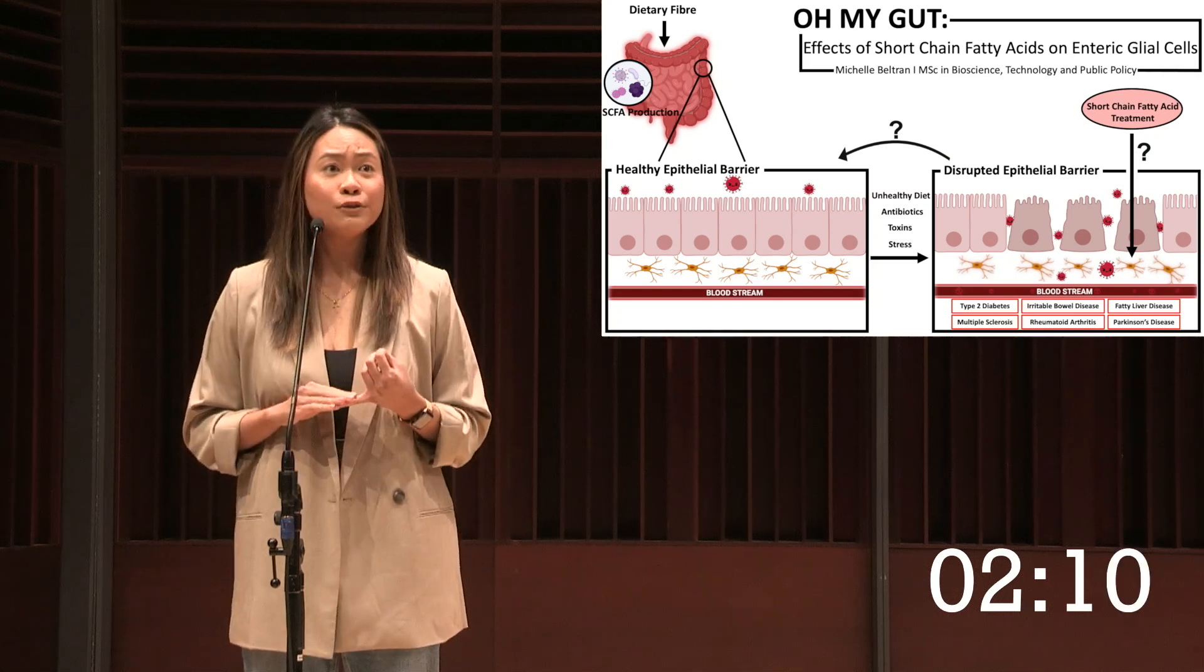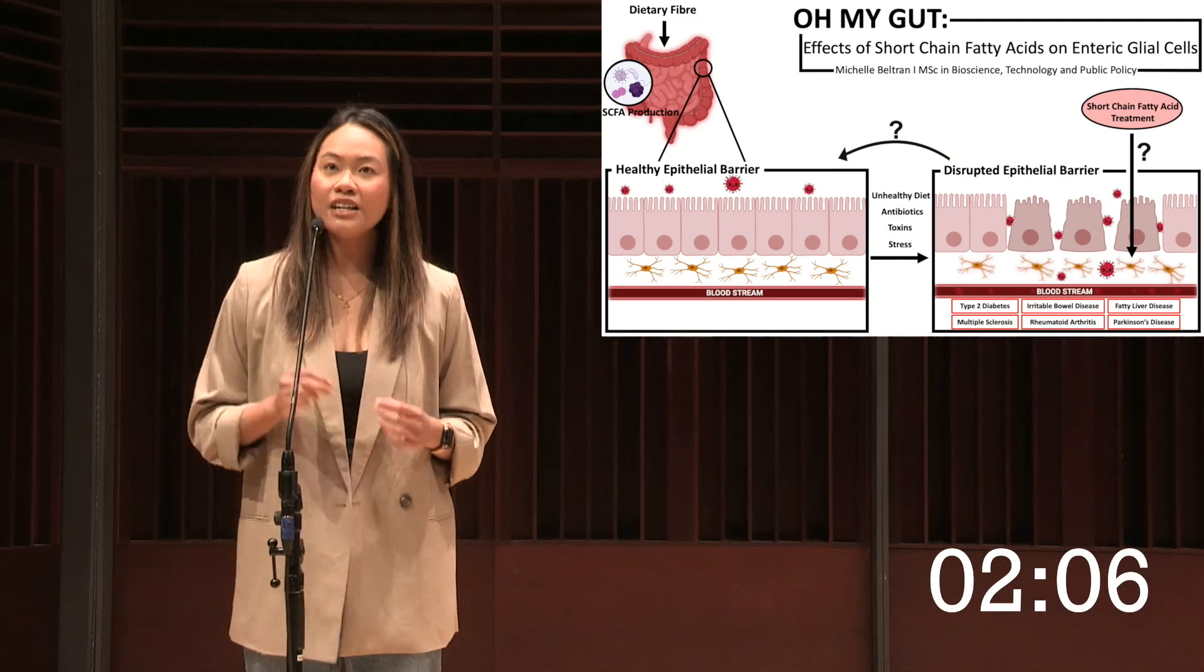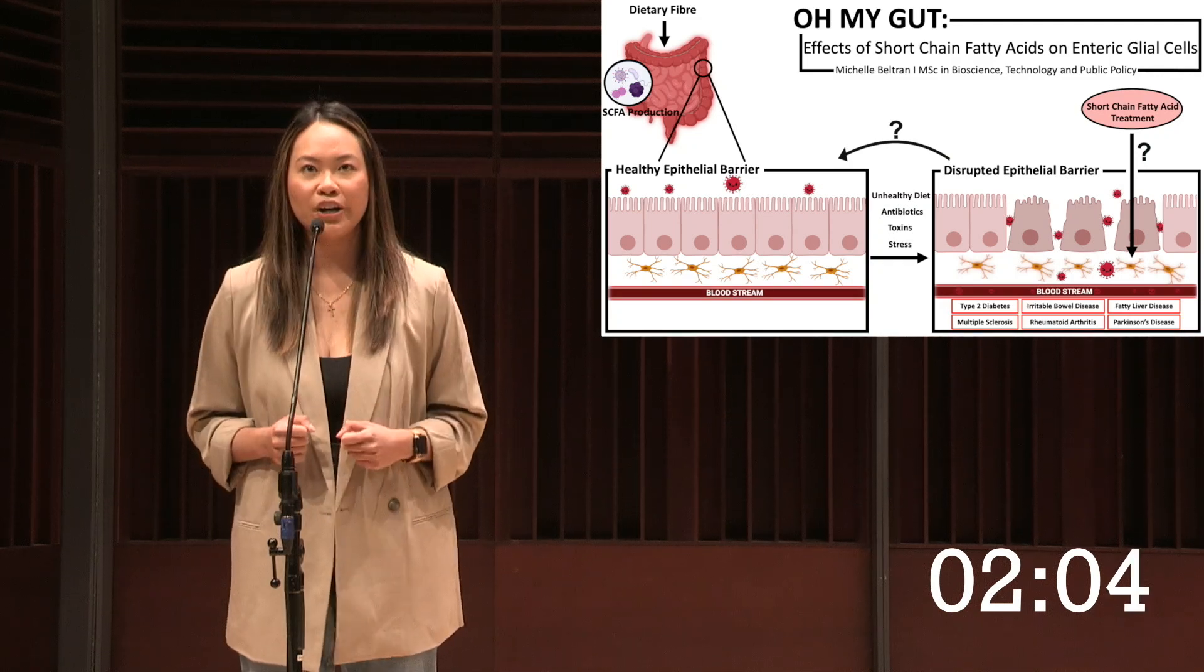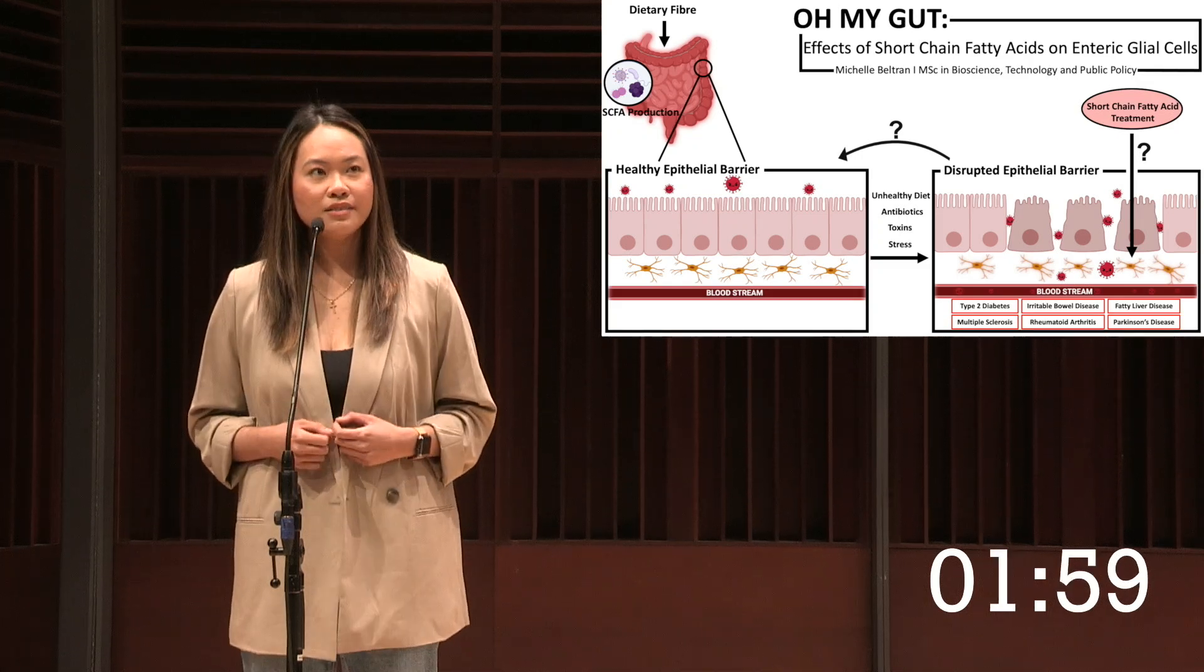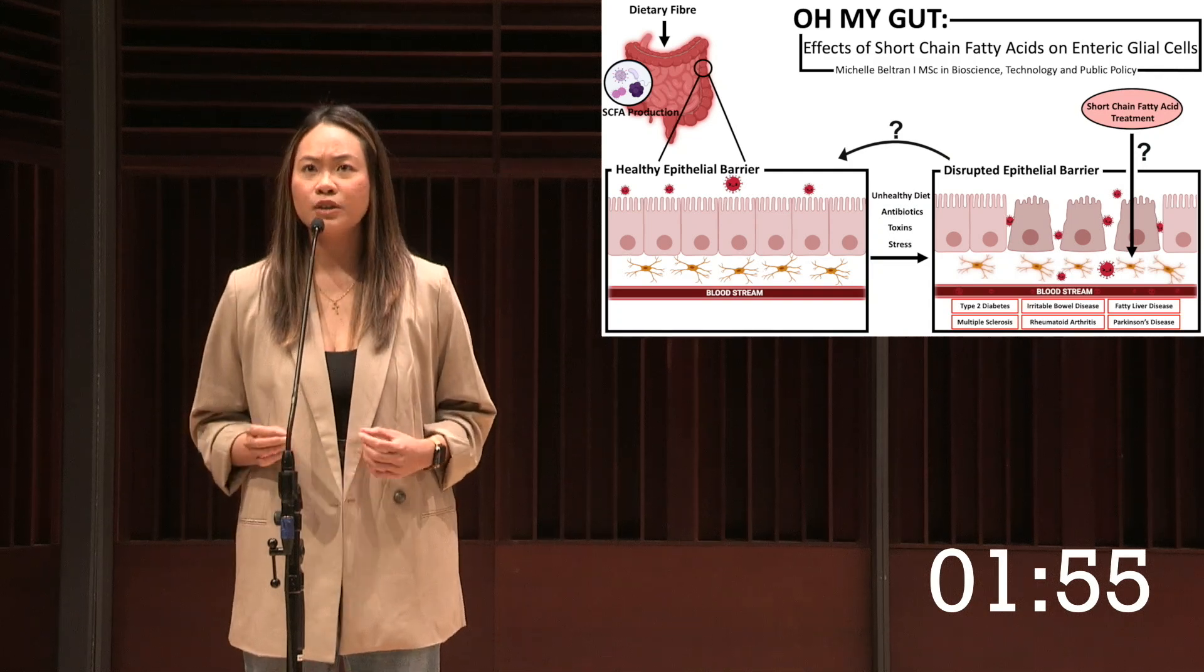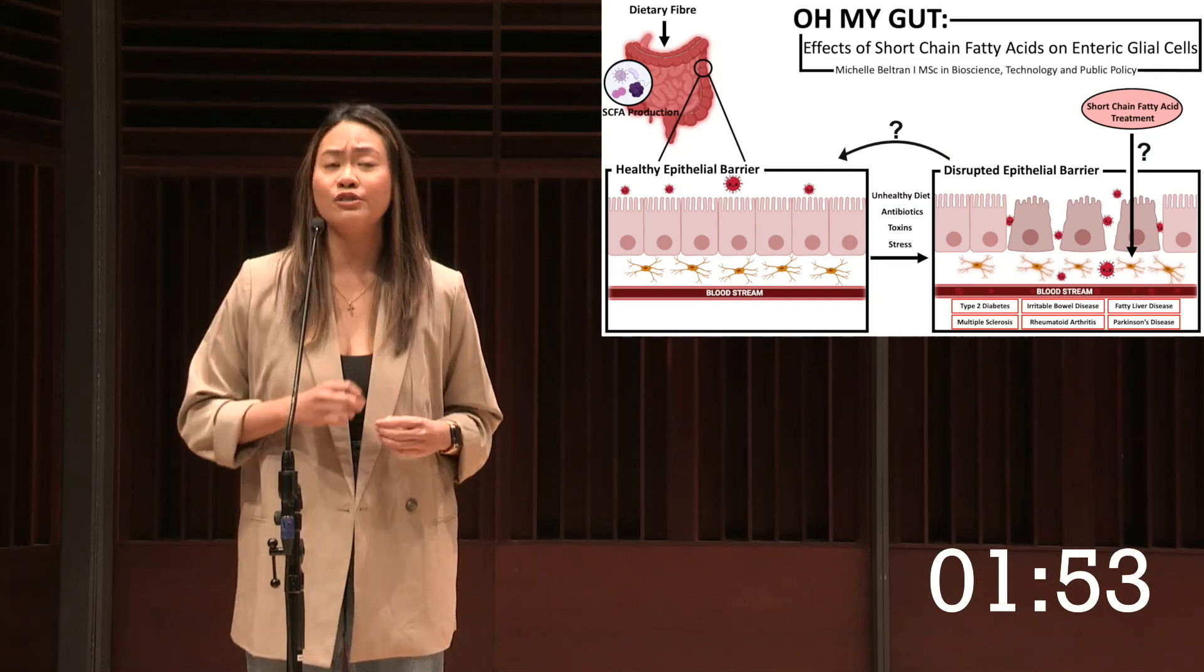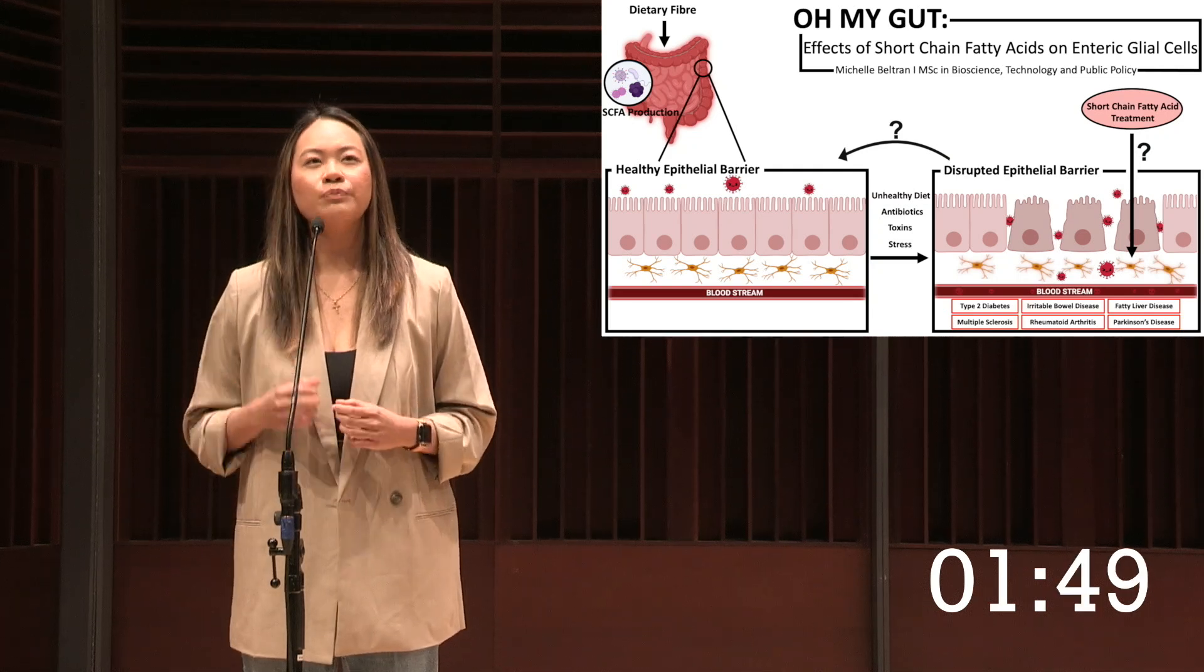However, overexposure to unhealthy foods, antibiotics, toxins or even stress can lead to the disruption of the epithelial barrier, exposing enteric glial cells to harmful materials. In response, enteric glial cells switch their behavior and become reactive, producing factors that further damage the epithelial barrier, allowing toxins to enter our bloodstream.